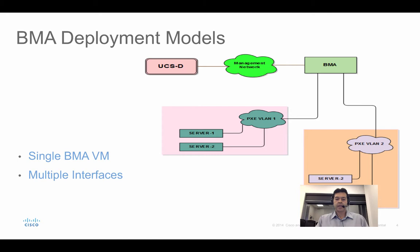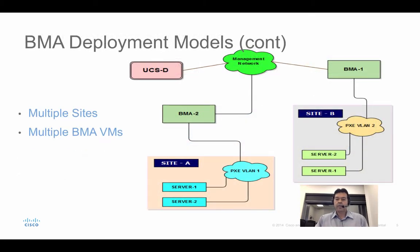The model is a single BMA, though in later versions Cisco added support for multiple BMAs. Why do you need multiple BMAs? Because the bare metal agent pushes huge data when installing an operating system like Windows — you don't want that going over the WAN. So each data center, close to where you're pushing the OS, should have a bare metal agent. You can have one UCSD connecting to multiple BMAs for multiple sites A, B, C.